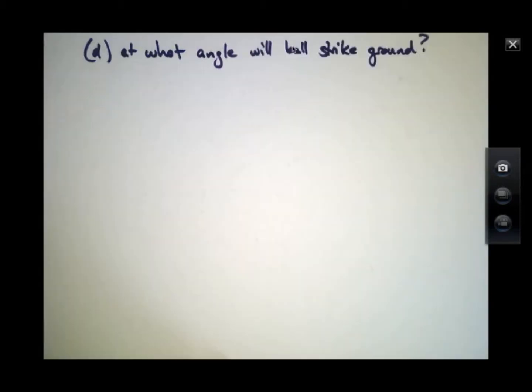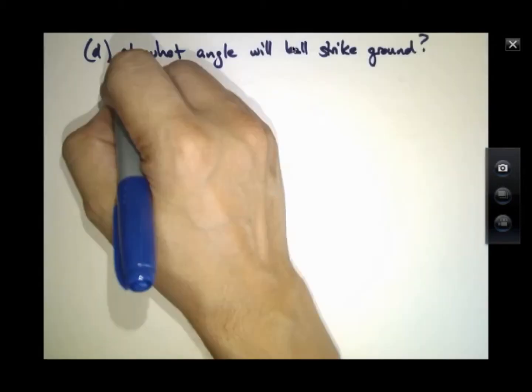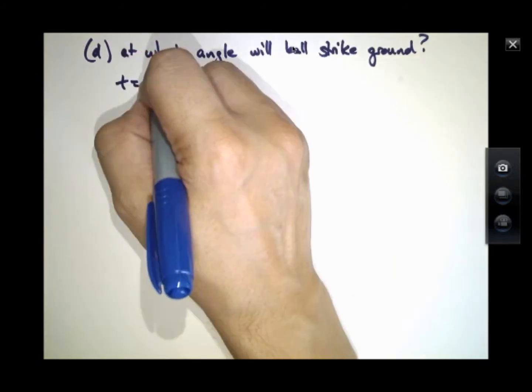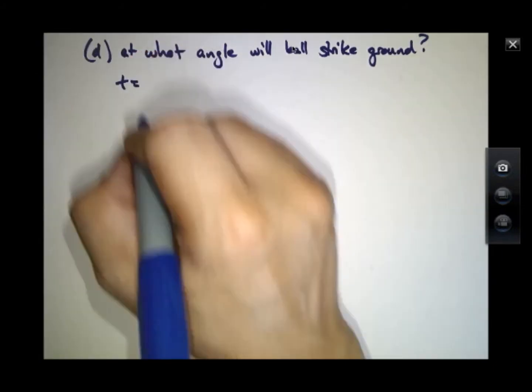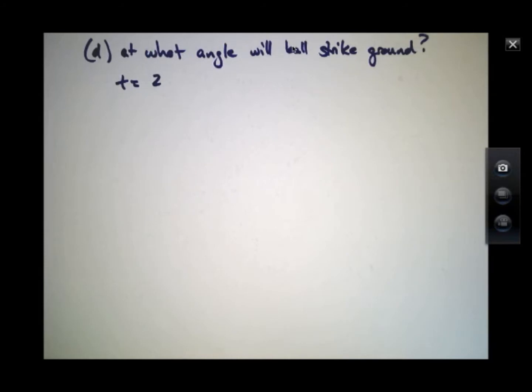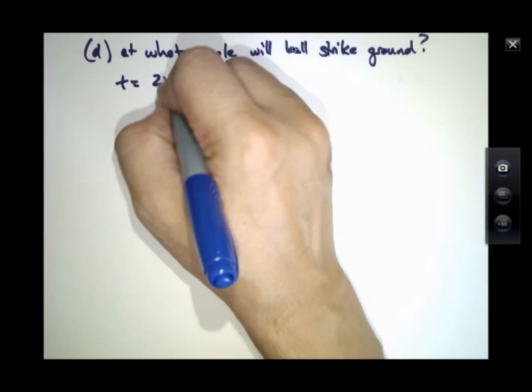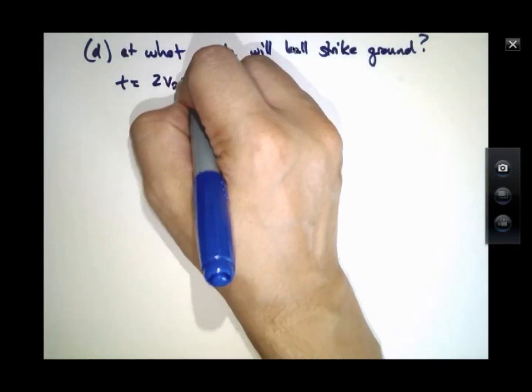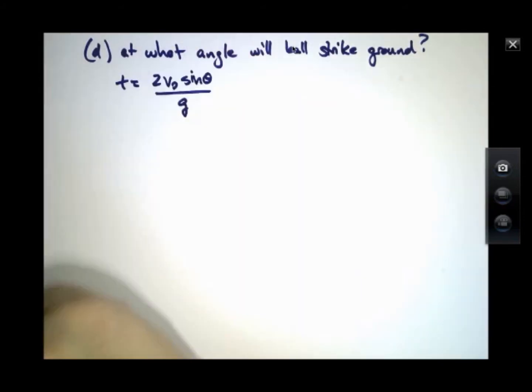At what angle will the ball strike the ground? Well, remember that the ball strikes the ground at some time 2 times V0 sine theta divided by G.